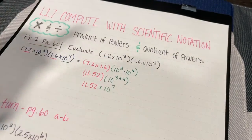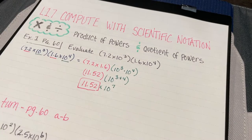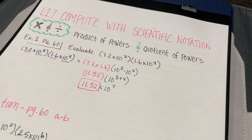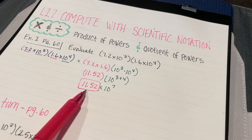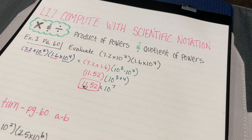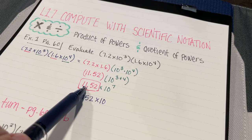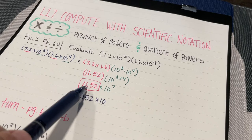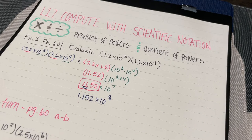So we have 11.52 times 10 to the seventh. But there's a problem — the factor in scientific notation must be greater than or equal to one and less than 10. Since 11.52 is greater than 10, I'm going to move my decimal place over one to the left, giving me 1.152. Because I moved the decimal one place to the left, I increase my exponent by one. So the answer is 1.152 times 10 to the eighth.